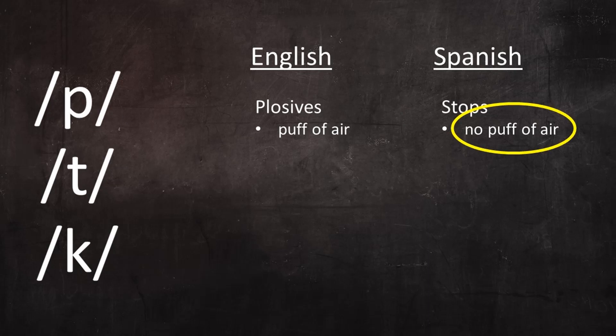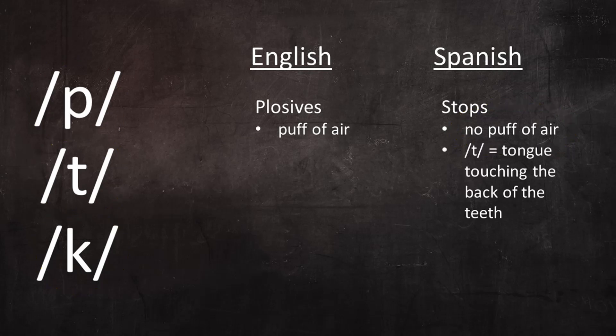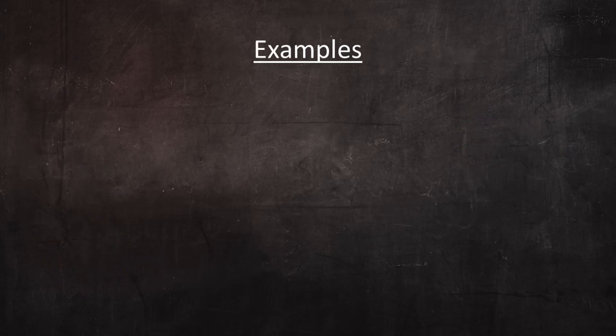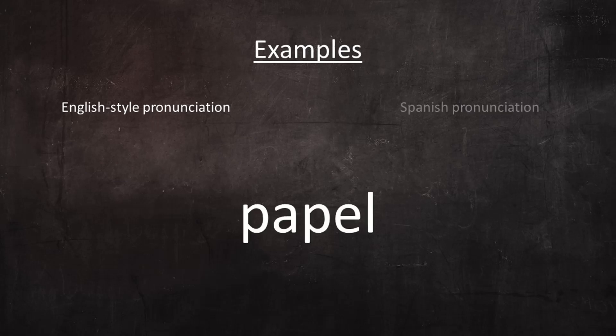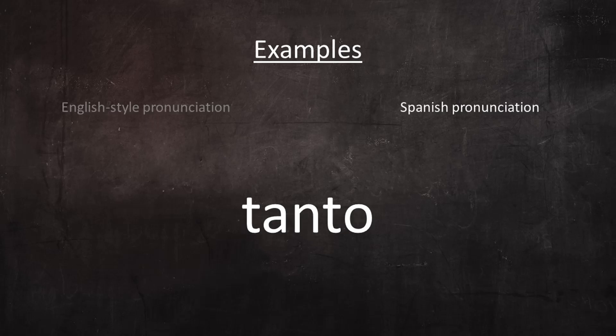This principle of not pronouncing Spanish unvoiced stops with a sudden release of air applies to all three of these sounds. Additionally, Spanish T is pronounced with the tip of the tongue touching the back of the upper front teeth. This difference in tongue position also contributes to making Spanish T sound softer than the English equivalent. Here are three Spanish words pronounced first with English-style pronunciation, then with more accurate Spanish pronunciation. Observe that the more accurate version sounds softer, because the stops are not pronounced with a sudden release of air. Papel, papel, tanto, tanto, coco, coco.